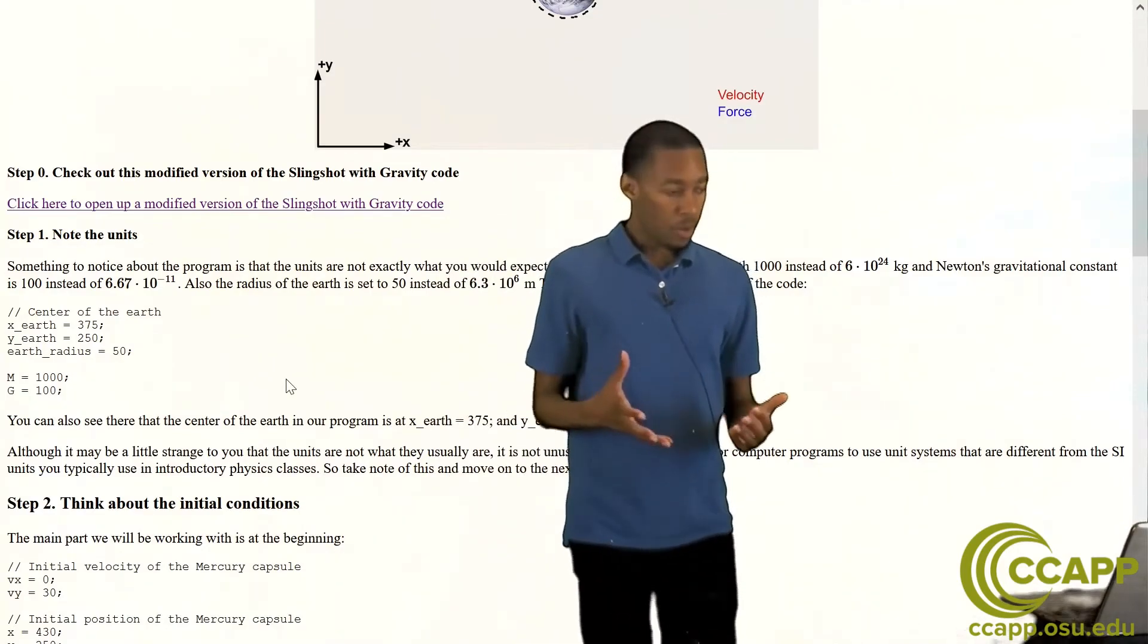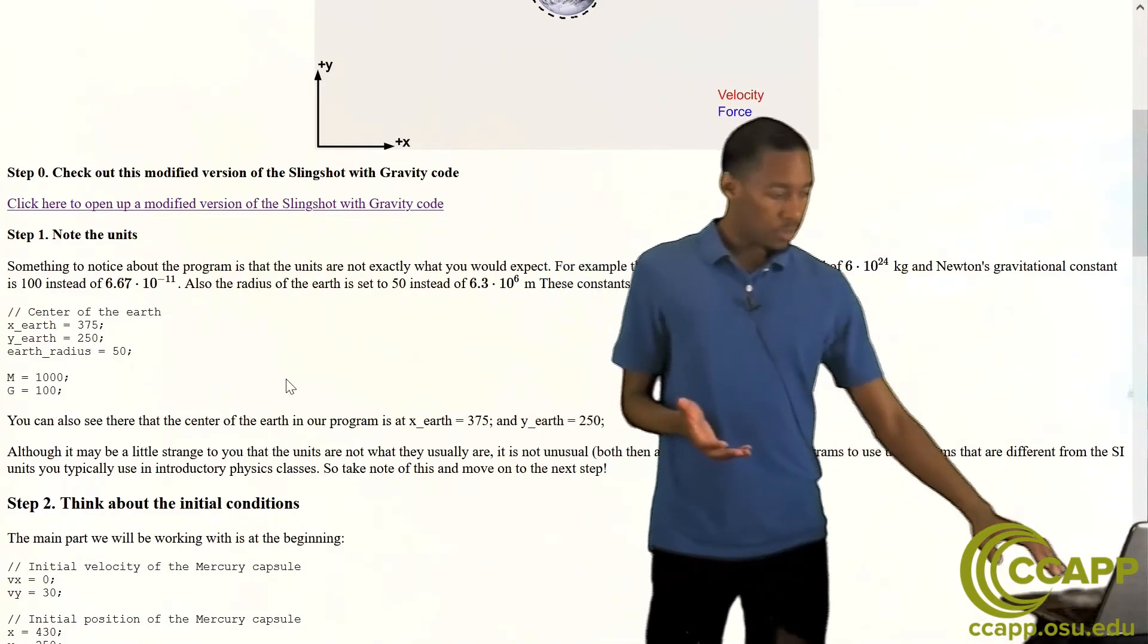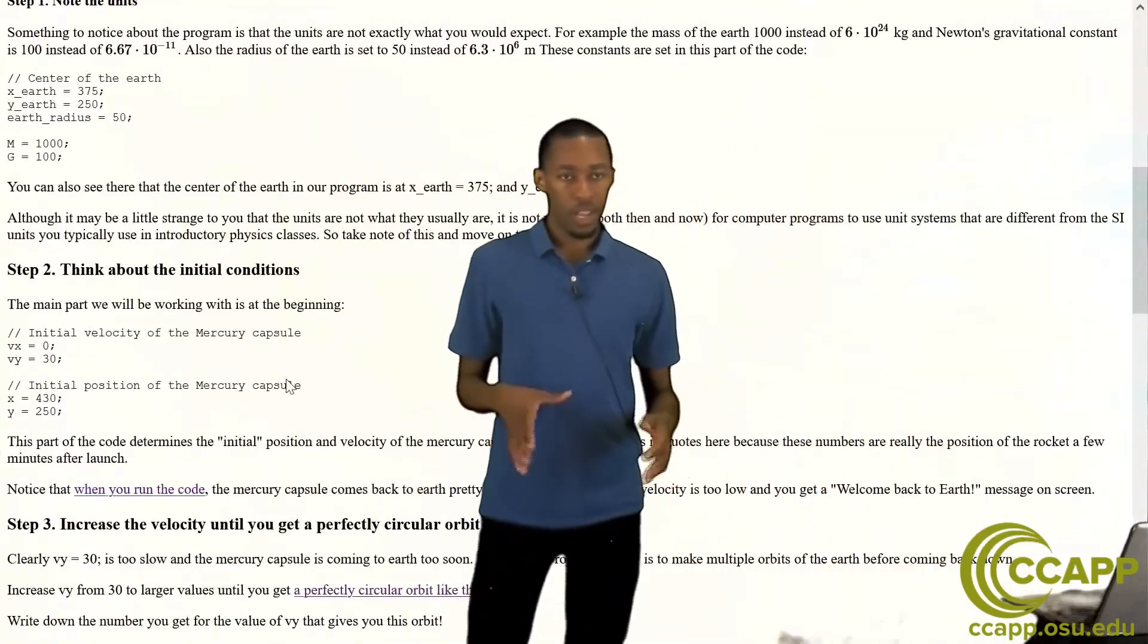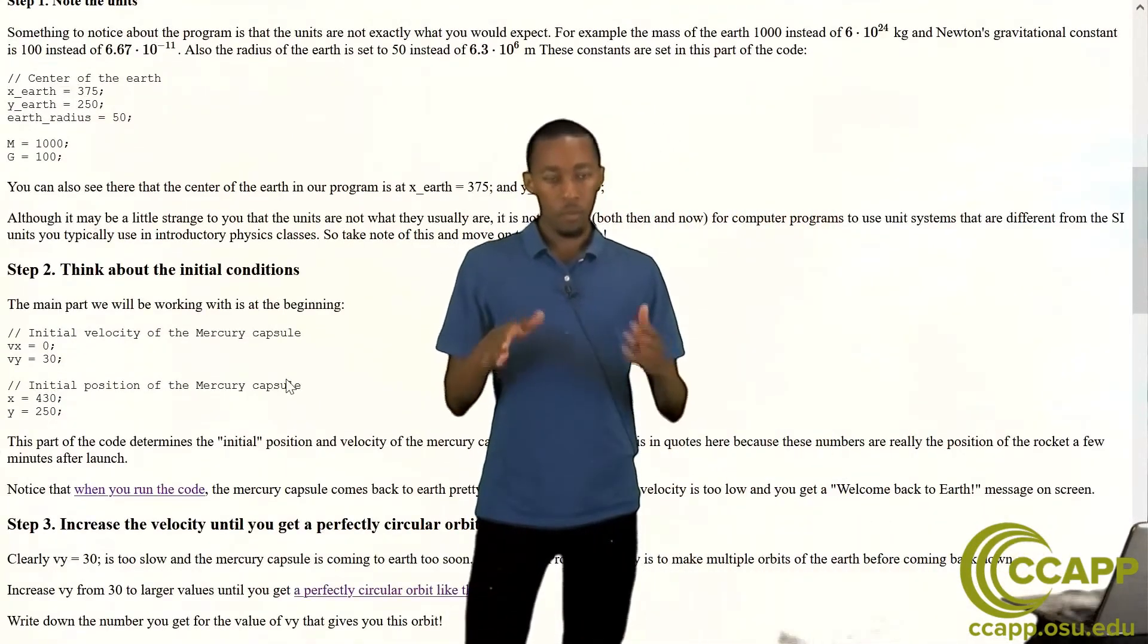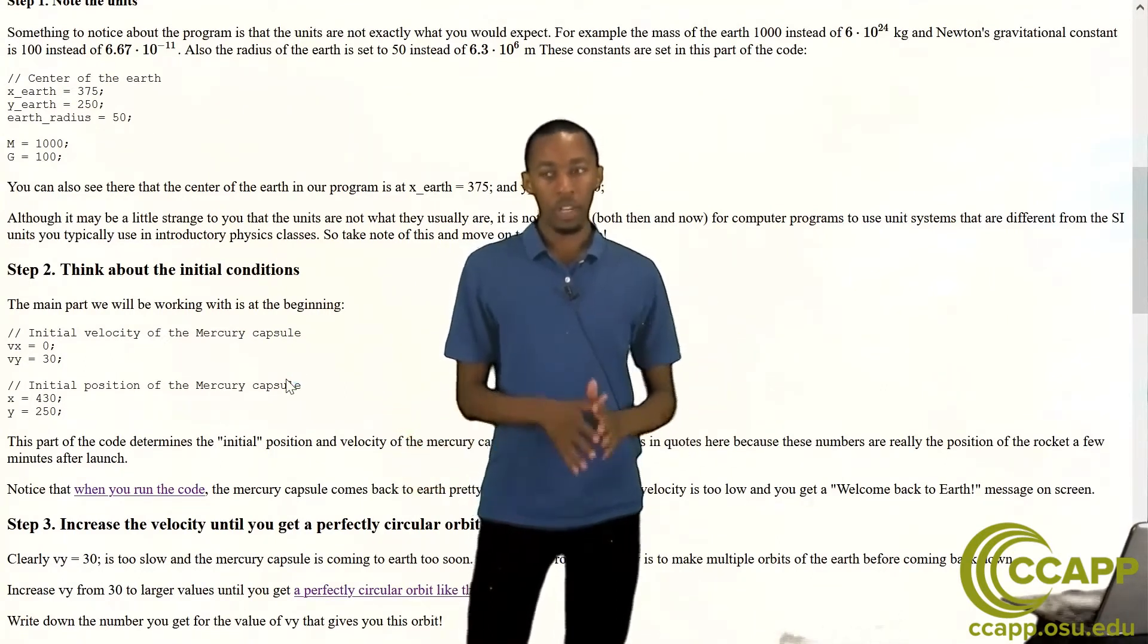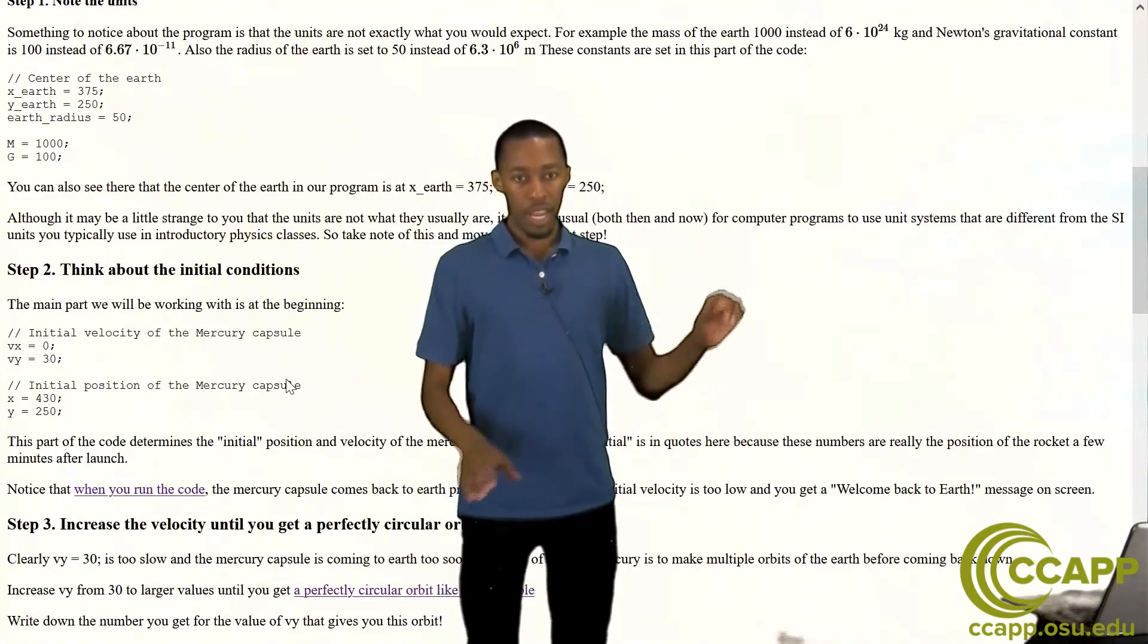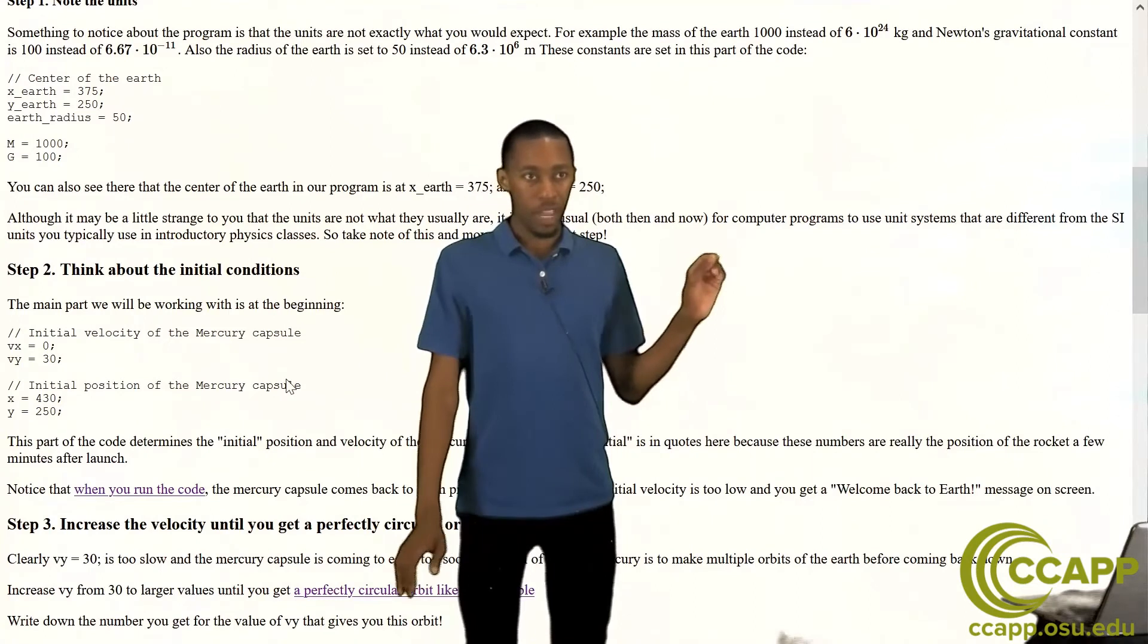And now step two we want to start thinking about the initial conditions. And what we mean by initial conditions is not so much the rocket being launched from earth, that is a type of initial condition but we're not starting from there. We're imagining some point where the rocket has already made it into space and it just got past the earth's atmosphere.